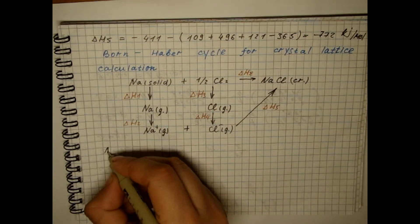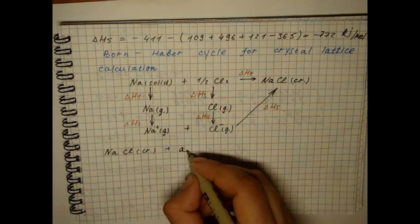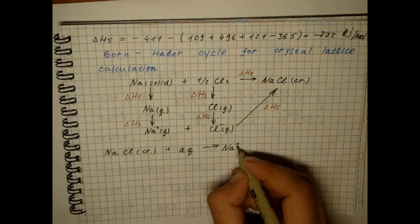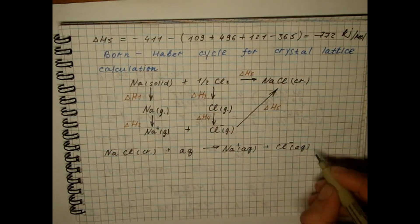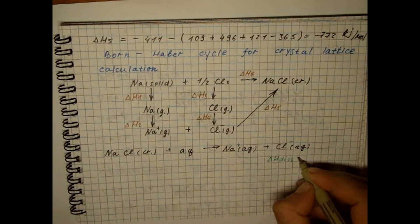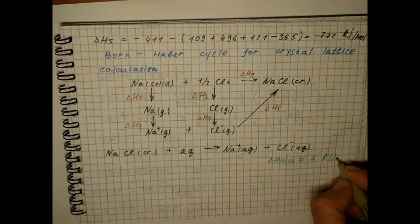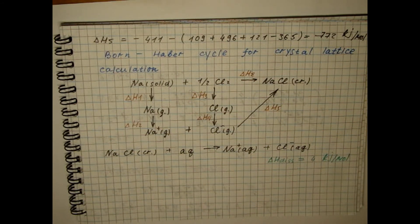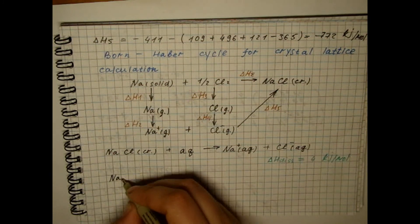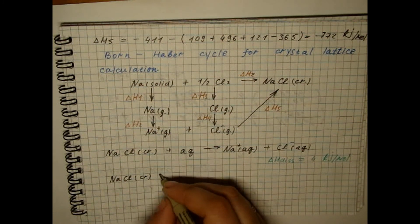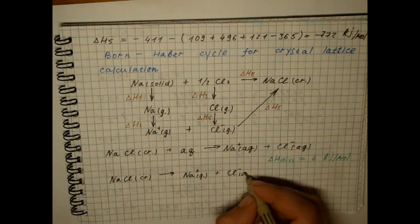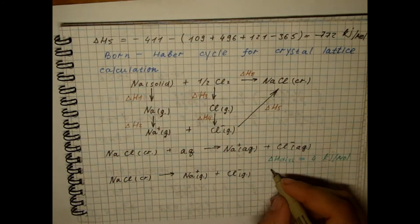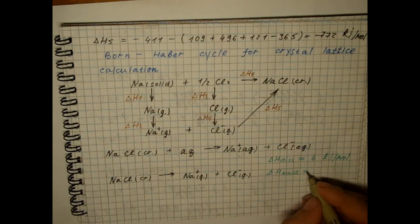If sodium chloride is dissolved in water, this process will be accompanied by a small resulting consumption of energy, since the process is endothermic. The enthalpy of this process is the thermal effect of salt dissolution extrapolated to an infinitely dilute salt solution. The destruction of the crystal lattice is a process opposite to its formation — equal in magnitude and opposite in sign to the change in energy that accompanies the formation of the lattice.